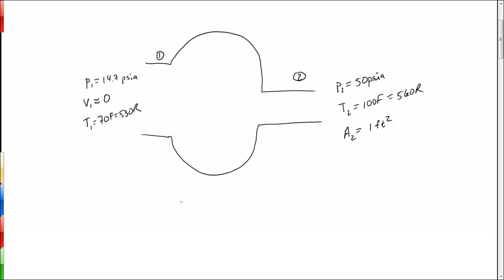The air flow rate, the mass flow rate through the compressor, is 20 pounds mass per second. And the power into the compressor, we'll call it W dot shaft, is equal to 600 horsepower.